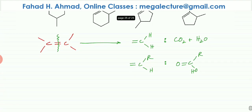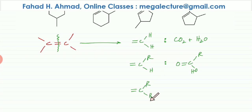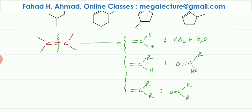Scenario three: if the double-bond carbon has carbon chains attached on both sides with no hydrogen, it changes into a ketone — just double bond O. We'll use these three scenarios as a guideline to oxidize each of the given options.